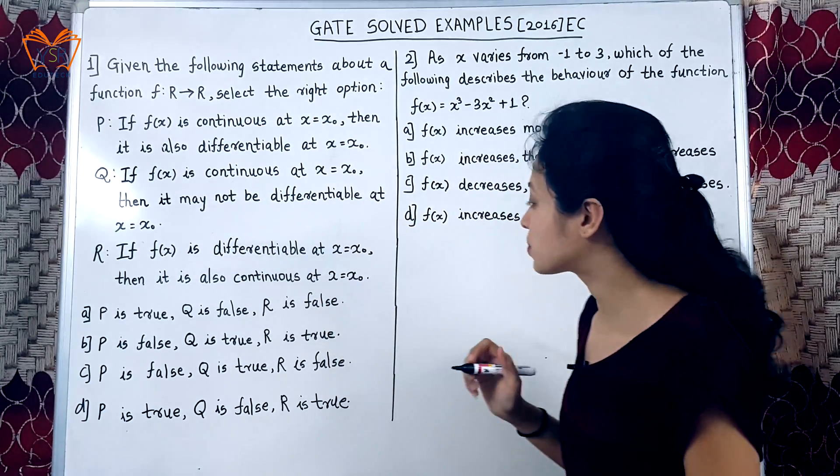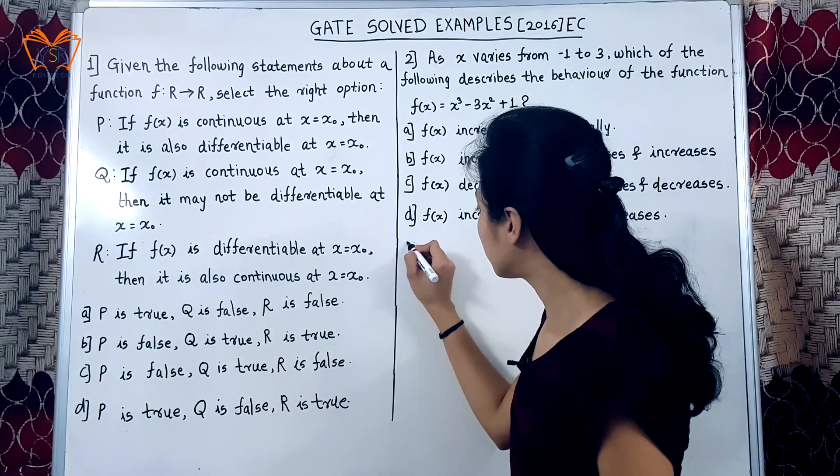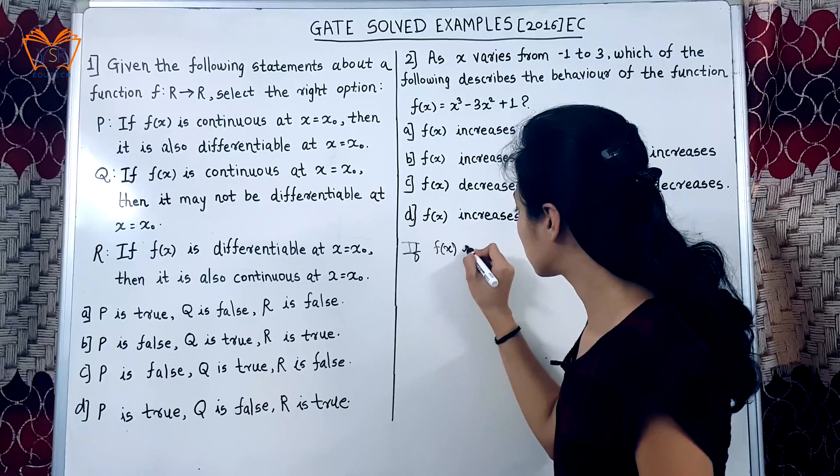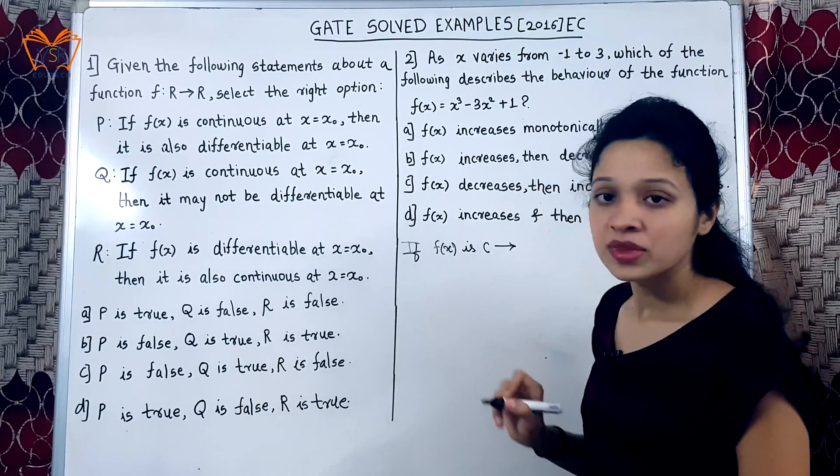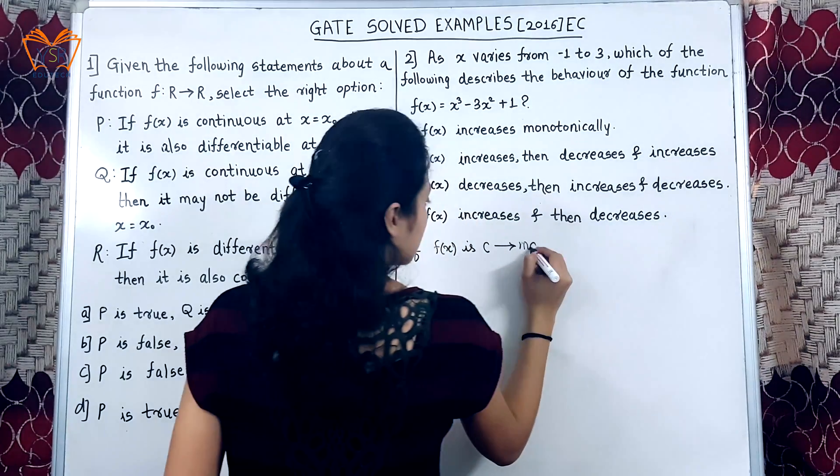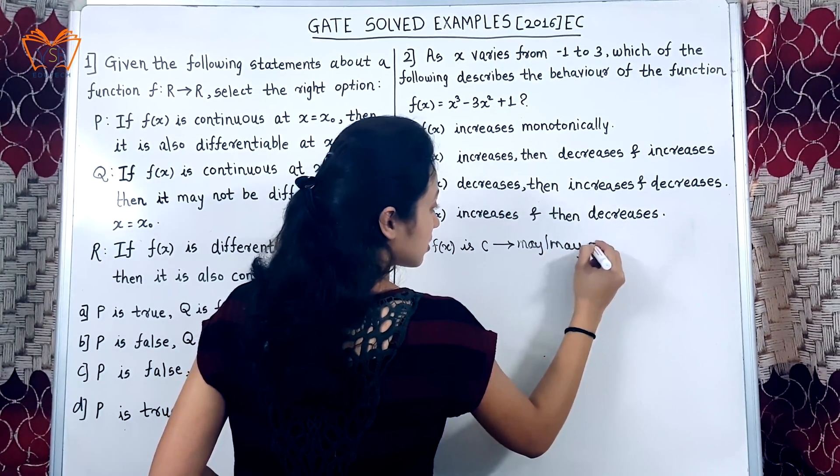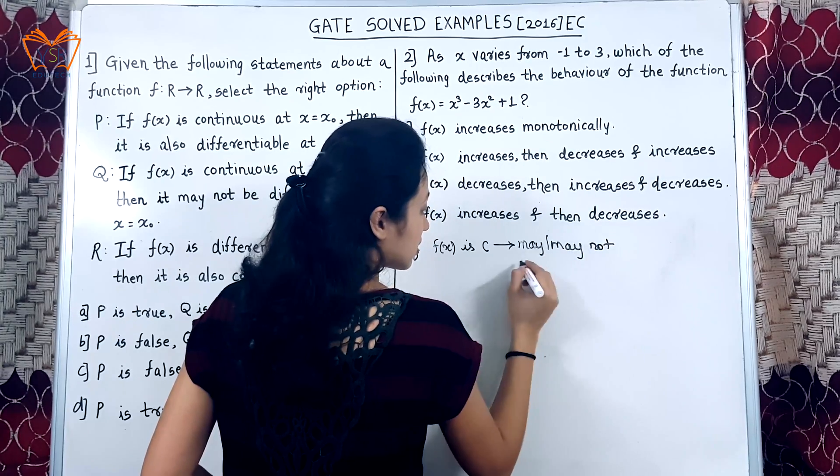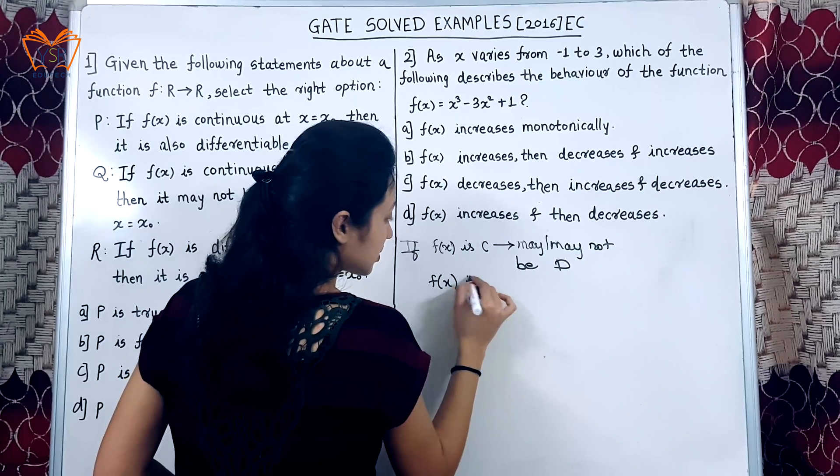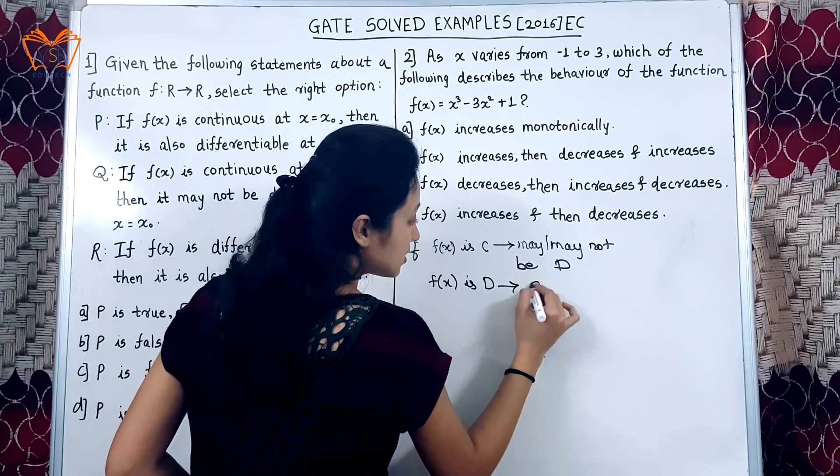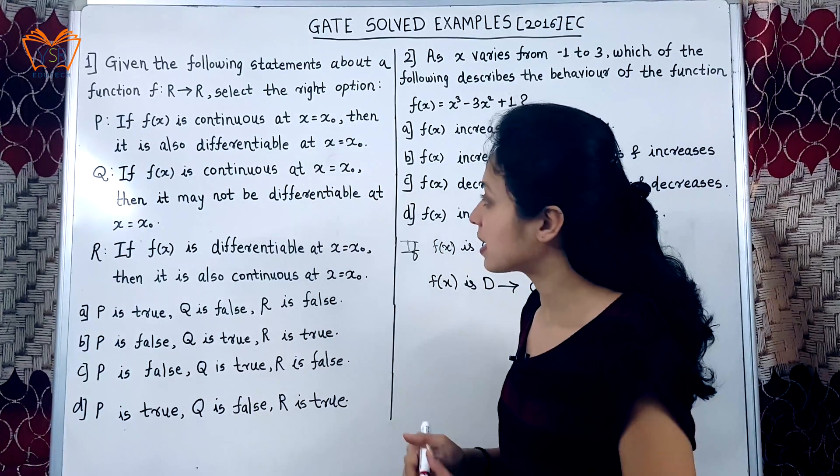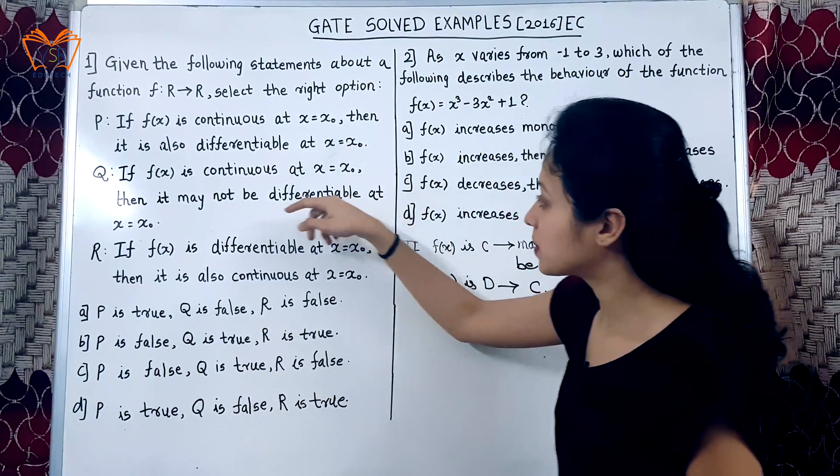Select the right option. Before we read the options, let me tell you one sentence that is, if function is continuous, it may or may not be differentiable. But if function is differentiable, it is always continuous. Now let us apply this statement to our options and let us see which one is correct.